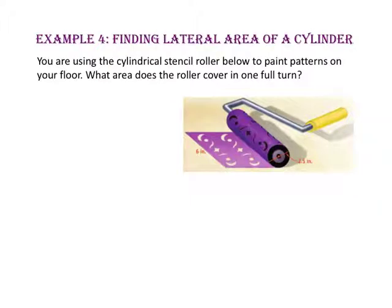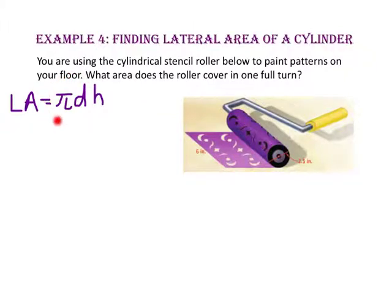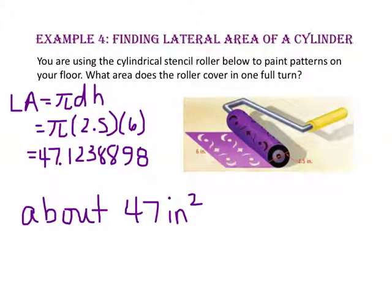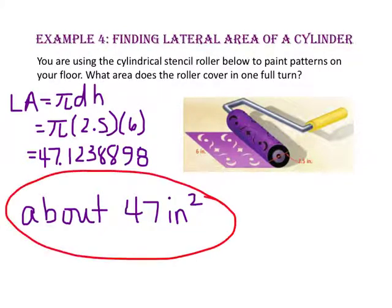In example four, we will find the lateral area of a cylinder. You are using a cylindrical stencil roller to paint patterns on your floor. What area does the roller cover in one full turn? Lateral area is the circumference times the height. We are given the diameter, so we use pi times D times height: 2.5 times 6 is 15 times pi, which is approximately 47.1 inches squared. So the roller covers about 47 inches squared in one turn.